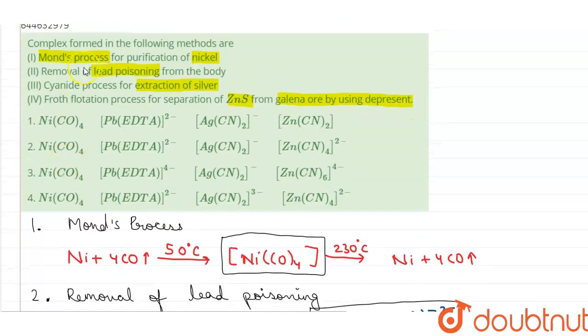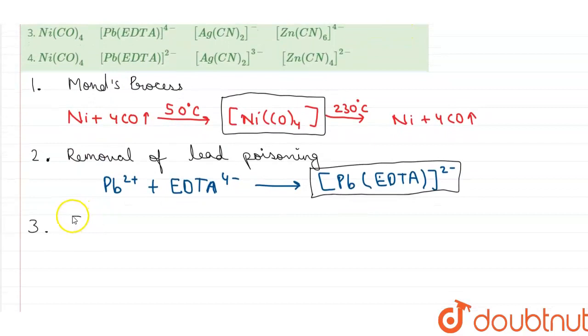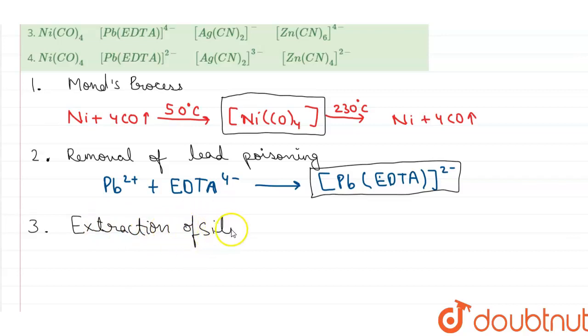That is cyanide process for extraction of silver. The complex formed in the extraction of silver with the reaction is using the ore of silver, reacting it with sodium cyanide.